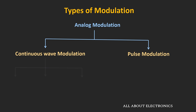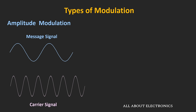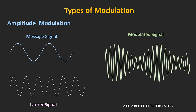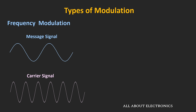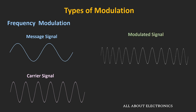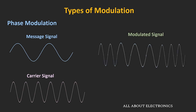For continuous wave modulation, there are mainly three types: amplitude modulation, frequency modulation, and phase modulation. In amplitude modulation, the amplitude of the carrier wave changes according to the message signal — the shape of the carrier wave changes according to the message signal. In frequency modulation, the frequency of the carrier wave changes according to the message signal; with an increase in the amplitude of the message signal, the frequency of the modulated signal also increases. In phase modulation, the phase of the modulated signal changes according to the message signal.